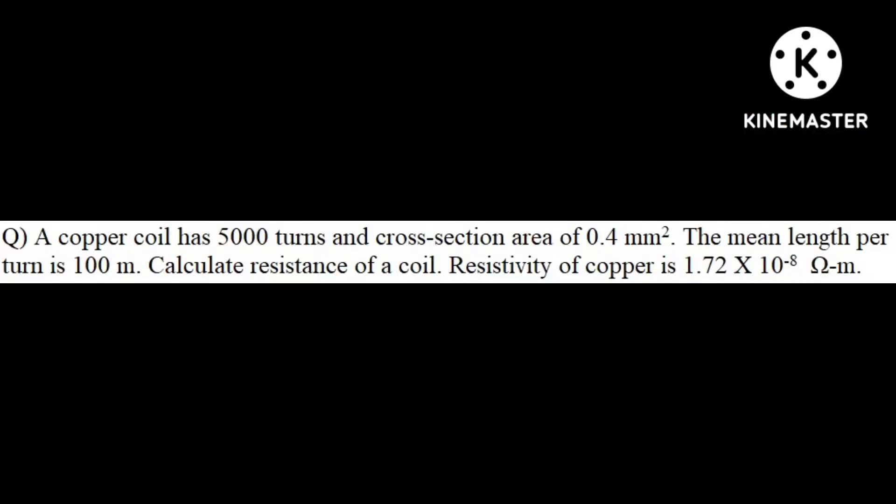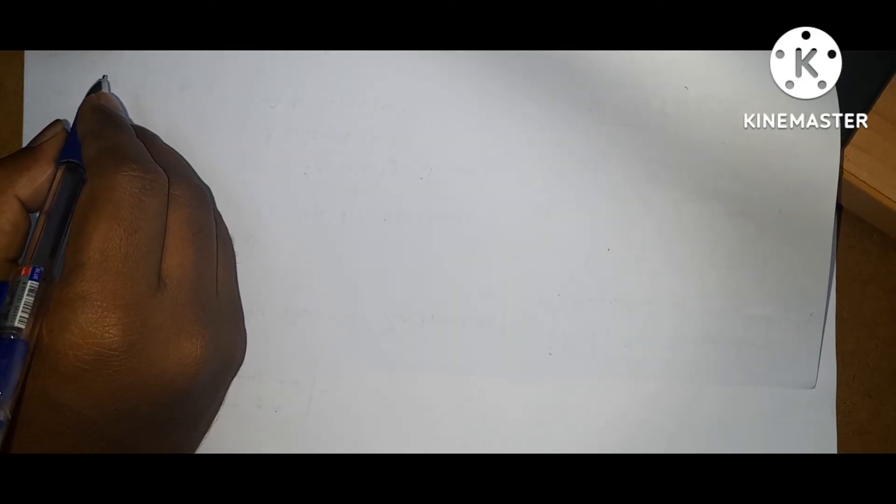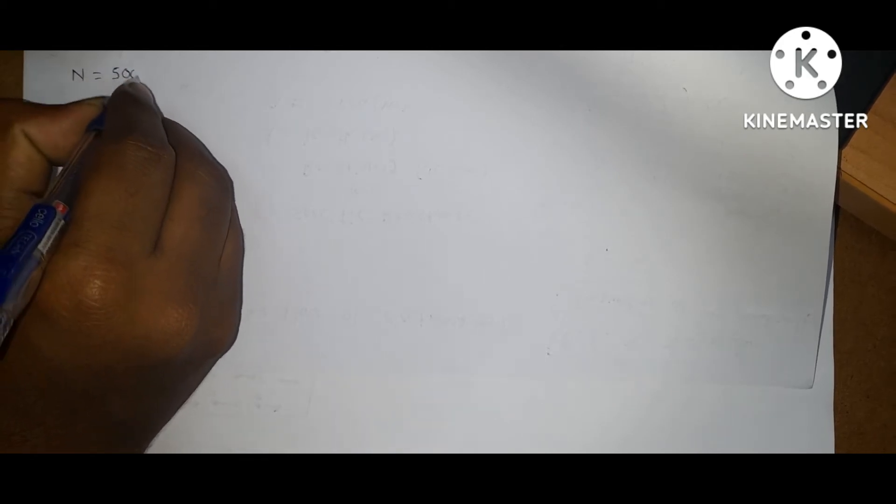Next question: a copper coil has 5000 turns and a cross-section area of 0.4 mm square. The mean length per turn is 100 meters. Calculate the resistance of the coil. The resistivity of copper is 1.72 into 10 power minus 8 ohm meter. Write down the given data: number of turns is equal to 5000.